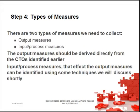There are two types of measures we need to collect: output measures, and input or process measures. The output measures should be derived directly from the CTQs identified earlier. Input or process measures that affect the output measures can be identified using some techniques we will discuss shortly.